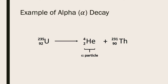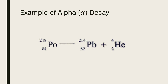Let's look at examples of alpha decay. In the first example, uranium-235 decays into thorium-231 and releases an alpha particle which is helium. In another example, polonium-218 decays into lead-214 and releases an alpha particle which is helium.